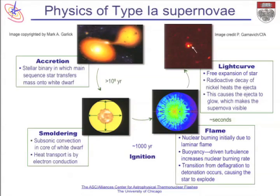The pressures and temperatures in the center gradually increase, and eventually the center is made out of carbon and oxygen. Carbon burning starts to smolder and there's convection throughout this region. Somewhere in here, some little fluctuation in density and temperature will lead to a flame igniting, and then it will probably be torn apart and nothing will happen.